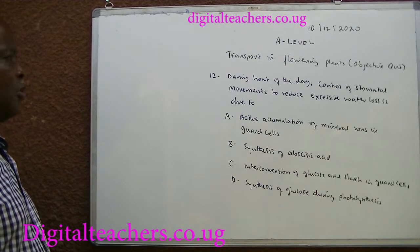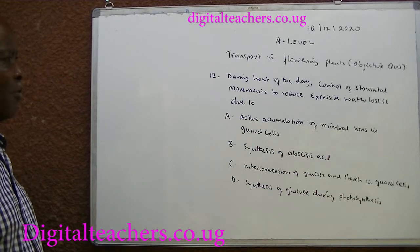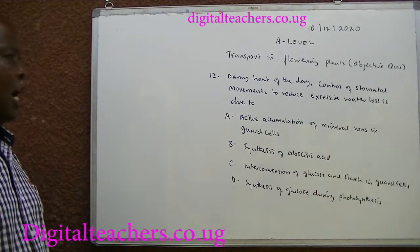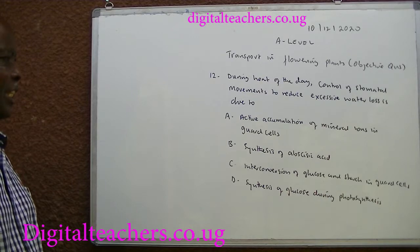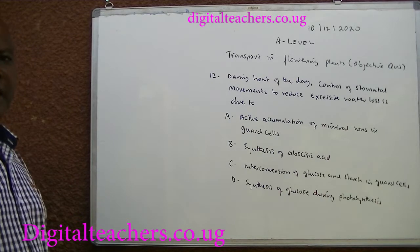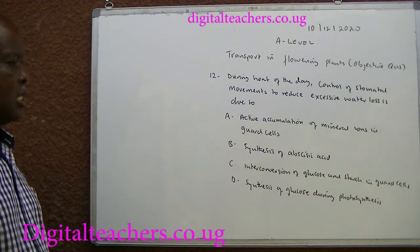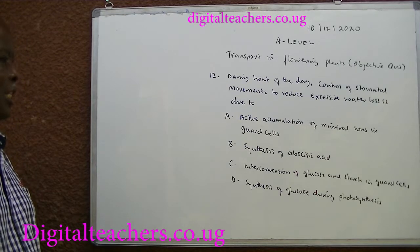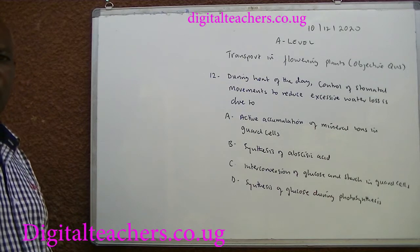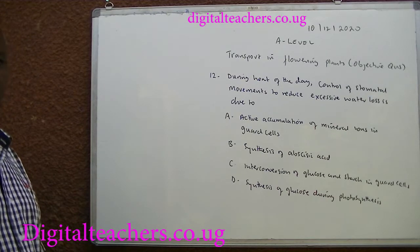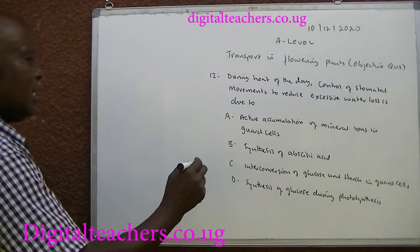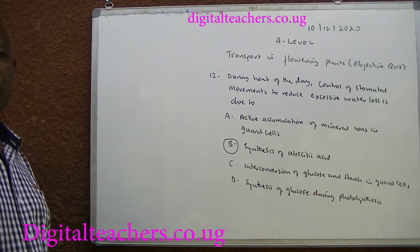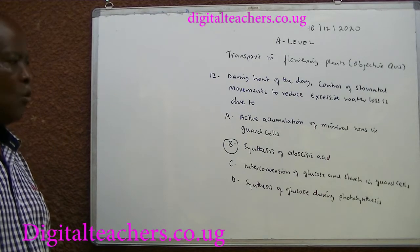Number 12. During the heat of the day, control of stomata movements to reduce excessive water loss is due to A. Active accumulation of mineral ions in guard cells. B. Synthesis of abscisic acid. C. Interconversion of glucose and starch in guard cells. D. Synthesis of glucose during photosynthesis. You can pause and answer. The answer is B. Synthesis of abscisic acid causes closure of the stomata, reducing water loss.